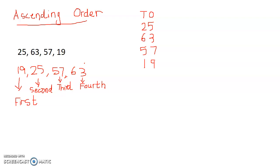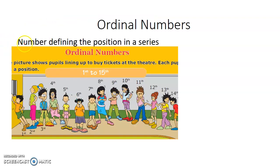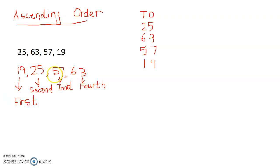I hope ordinal numbers are clear to you. When we arrange numbers in a series, the value that shows the position of that particular object in the series is the ordinal number — a number defining the position in a series. So 57's position is third, 25's position is second, 19's position is first, and 63's ordinal number is fourth.